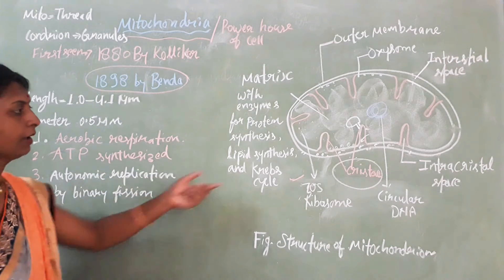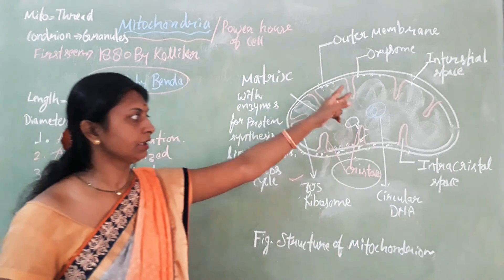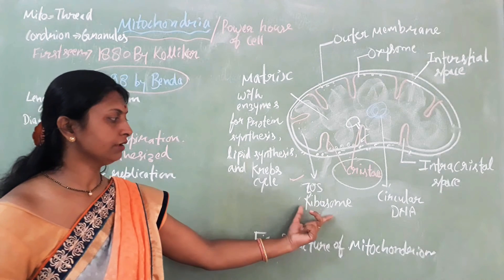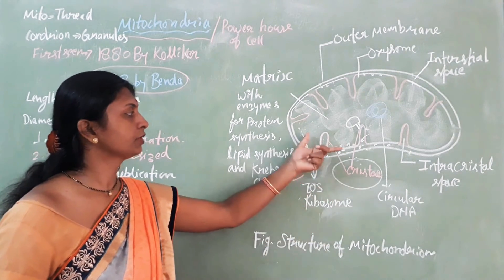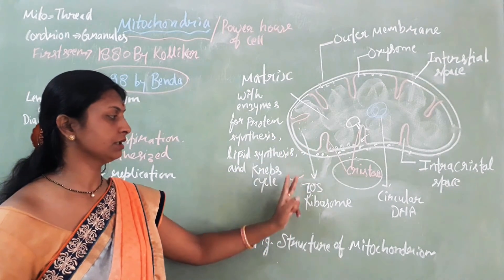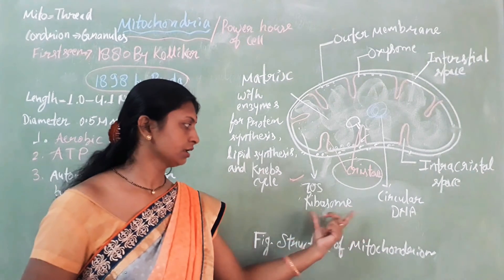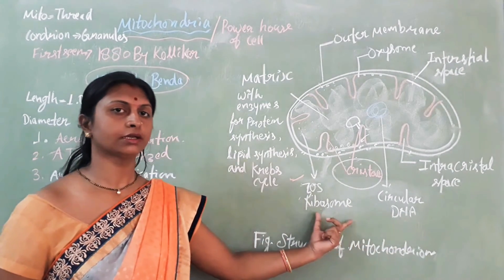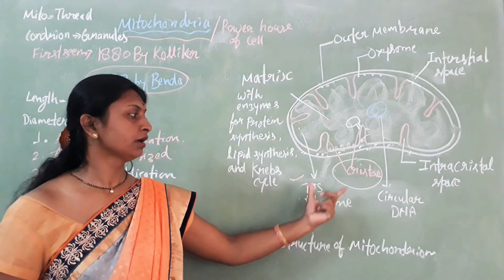By binary fission, mitochondria divide into two equal cells, and the genetic makeup is also divided equally. 70S ribosomes act as the site for protein synthesis. Many types of RNA are also present inside the mitochondria. These features - 70S ribosomes and circular DNA - are the same as prokaryotic cells.